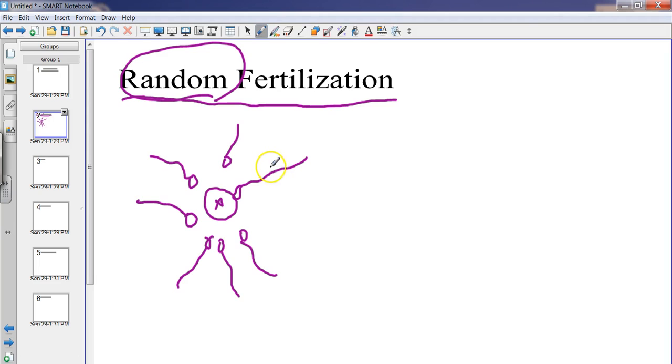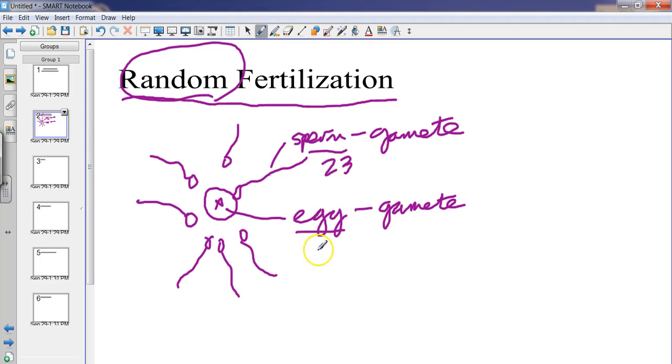So this sperm is a sex cell and it's called a gamete. This is stuff we need to know, all this new terminology. This here is the egg from the female, and that is also a gamete. The sperm and the egg both carry 23 chromosomes, or what we call a haploid cell.